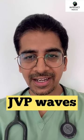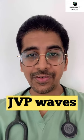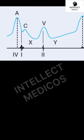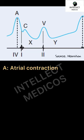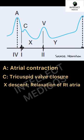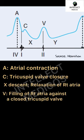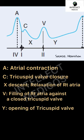In this one minute video I'll talk about JVP waves. The 'a' wave denotes atrial contraction, 'c' wave denotes tricuspid valve closure, 'x' descent denotes relaxation of the right atria, 'v' wave denotes filling of the right atrium against a closed tricuspid valve, and 'y' descent occurs as the tricuspid valve opens and blood from the right atrium begins to fill the ventricles.